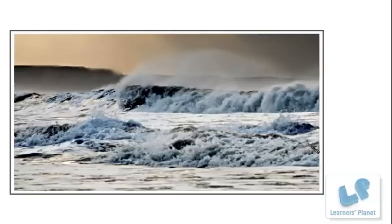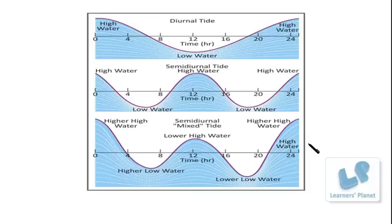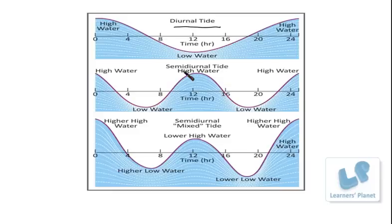Tides also vary in frequency. In some locations, tides are diurnal and semi-diurnal. Here you can see a graph showing the diurnal tide, the semi-diurnal tide — also called high water — and the mixed type of semi-diurnal tide. Tides are diurnal, meaning there is one high tide and one low tide every day.